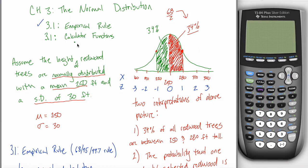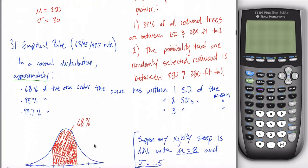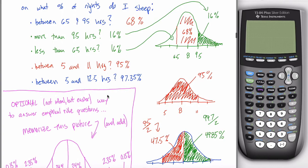There are two different calculator functions. One is called the normal CDF calculator function and one is called the inverse norm calculator function. We'll use both in place of the empirical rule, but they're different enough that I want to split them into two videos. In this video I'm only going to talk about normal CDF, and in the next video we'll talk about inverse norm.